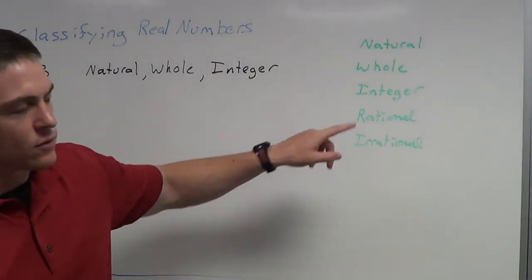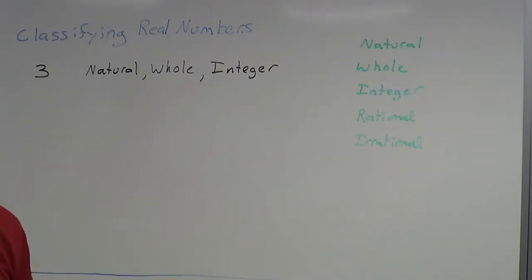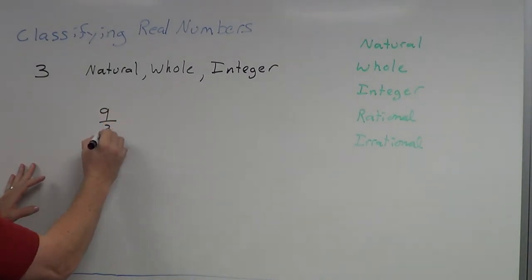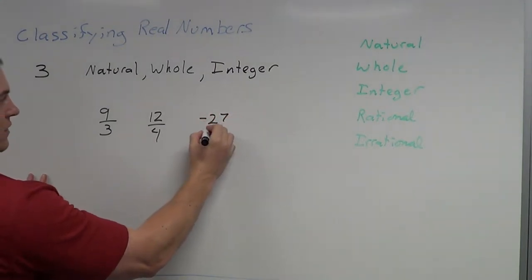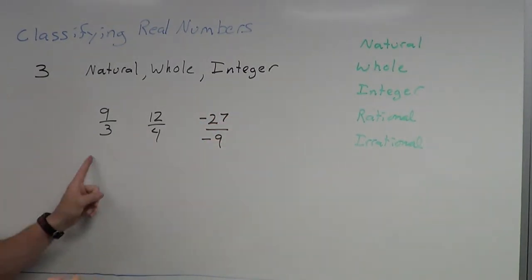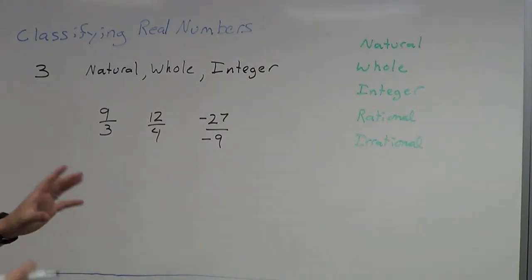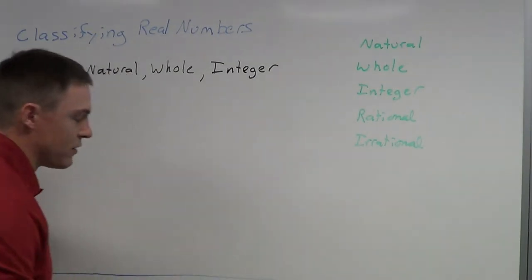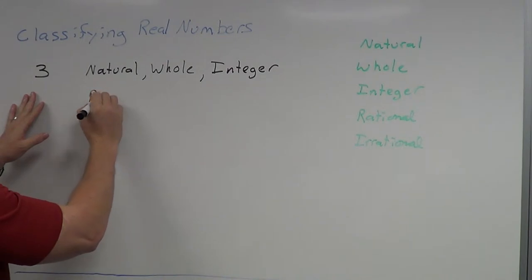A rational number — this one's a little tough. Rational numbers are the fractions, any number that you can make into a fraction. For example, three can be written as nine over three, twelve over four, or negative twenty-seven over negative nine. All these fractions reduce to three, so there are lots of different ways to write three as a fraction. With the knowledge that I can write it as a fraction, that also makes this a rational number.